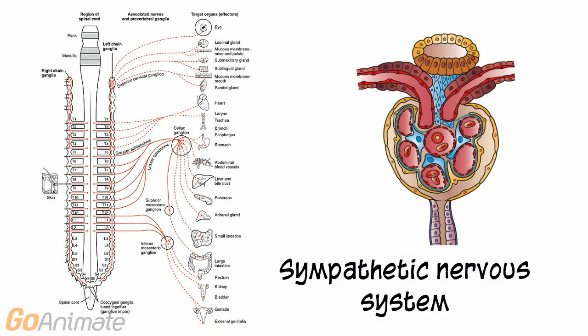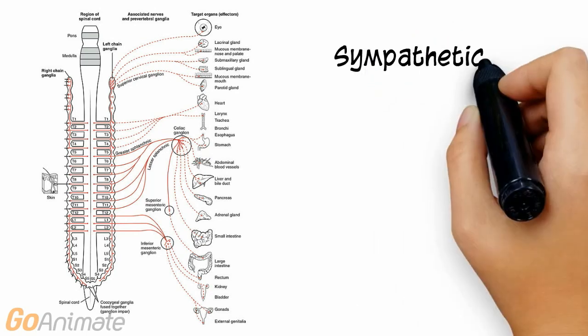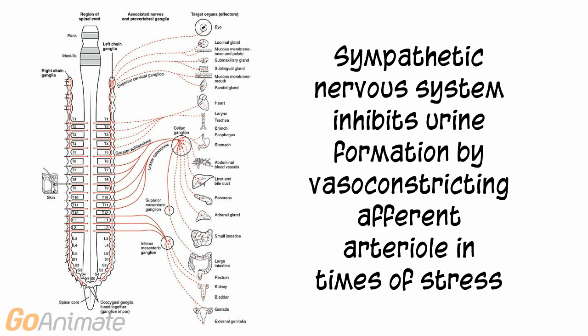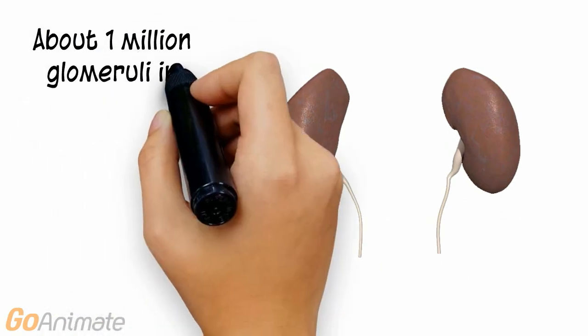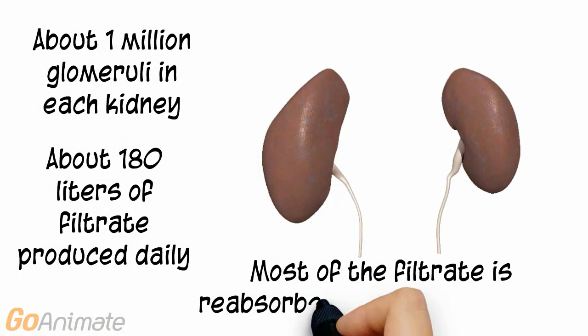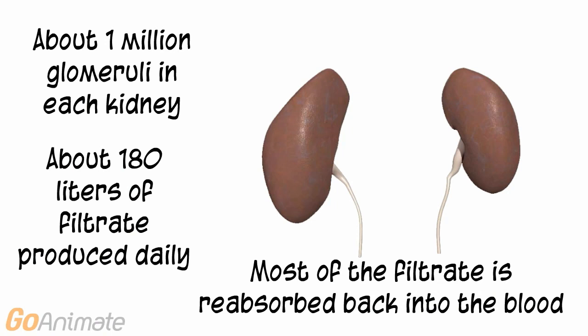The sympathetic nervous system also has an effect on the filter. In times of stress, the sympathetic nervous system shunts blood away from the kidneys via vasoconstriction. Even though the millions of glomeruli in the kidneys produce around 180 liters of filtrate every day, most of it is reabsorbed back into the blood by another process known as tubular reabsorption. We hope you have learned something about glomerular filtration and see you next time!